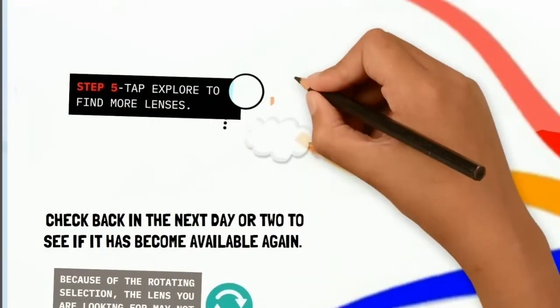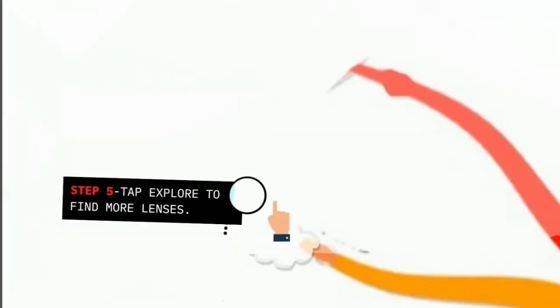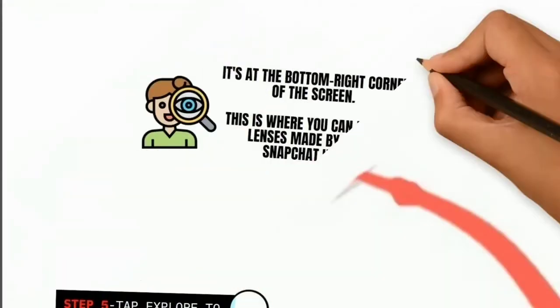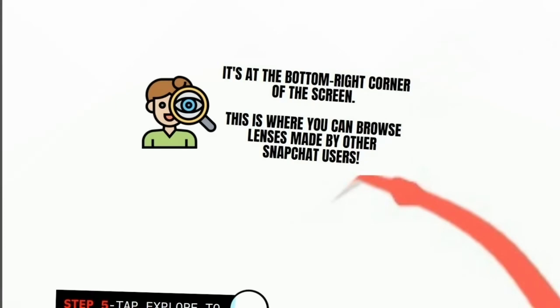Step 5: tap explore to find more lenses. It's at the bottom right corner of the screen. This is where you can browse lenses made by other Snapchat users.